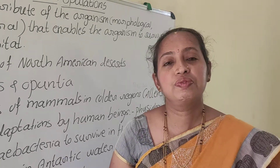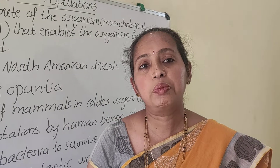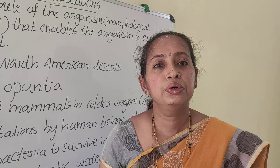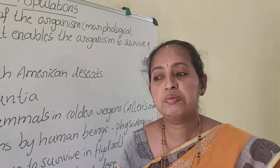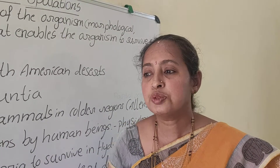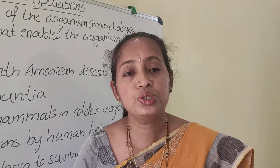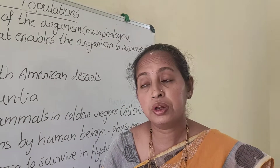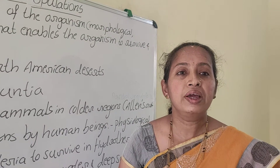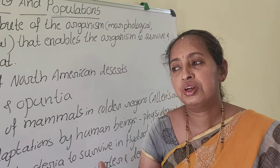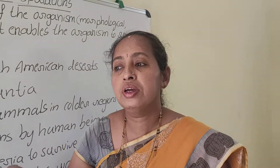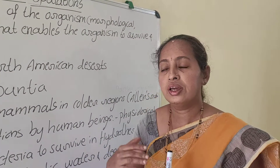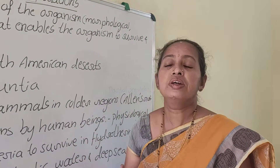Good morning students. In the last class we studied responses of organisms to abiotic factors. We studied that organisms show a great range of ability to respond or survive in a variety of extreme environmental conditions, and their response varies. It may be physiological adaptations — for example, regulators which maintain constant body temperatures — or they may go for migration if the environmental condition is not suitable. They may temporarily vacate the place or suspend their metabolic activities to survive in extreme conditions.